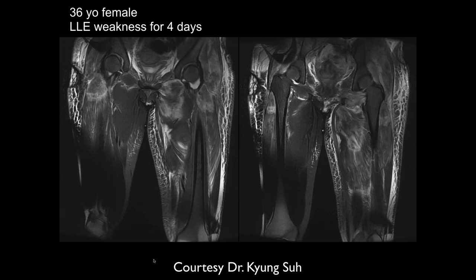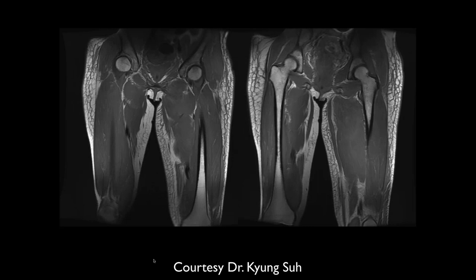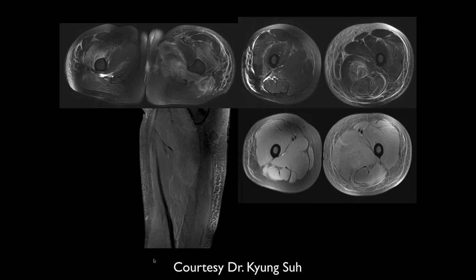A 36-year-old woman with left lower extremity weakness for four days. On T2 there is a lot of edema throughout the musculature of the left thigh, and to a lesser degree the right thigh. Since it's bilateral, you'd think something more systemic. On T1 there's also lots of edema on the left greater than the right.